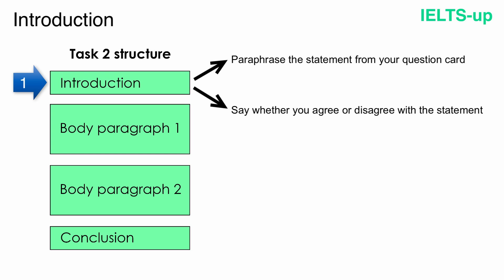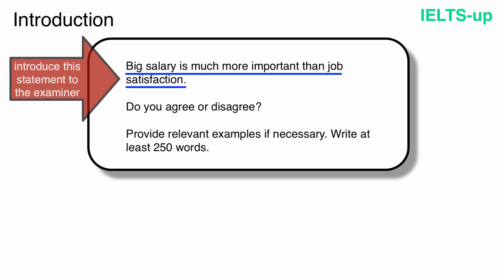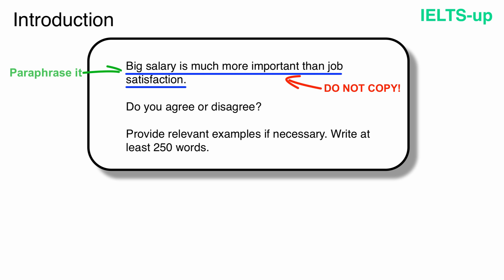Let's write the introduction together. This is our statement: 'Big salary is much more important than job satisfaction.' We need to introduce this statement to the examiner. But we cannot simply copy it word by word. That's why we need to paraphrase it to convey the meaning with different words.